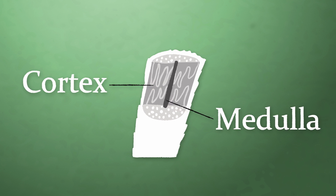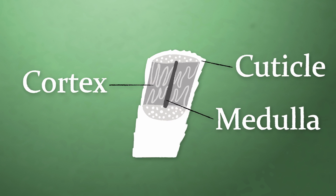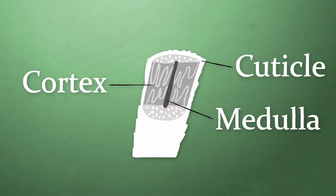Protecting the cortex is hair's outermost layer, the cuticle. As hair's armor, it's made up of overlapping scales. Temporary dye just sticks to the cuticle — it's more like paint, really — and it'll usually circle the drain with your next shampoo.